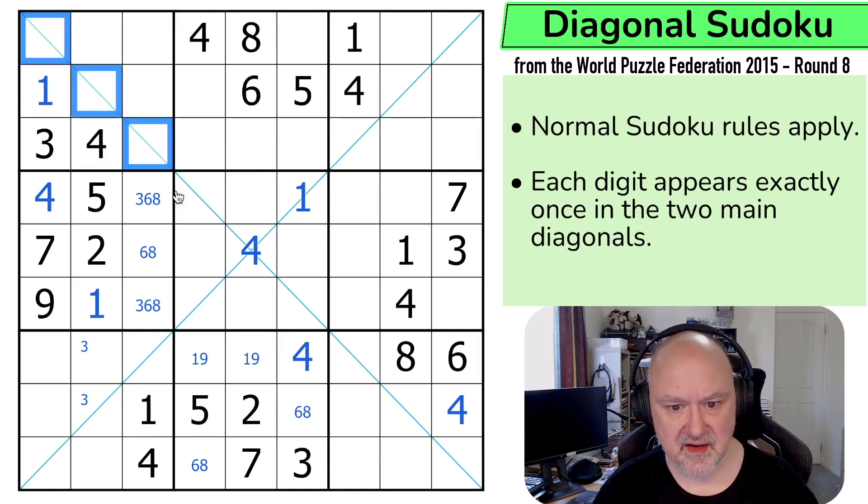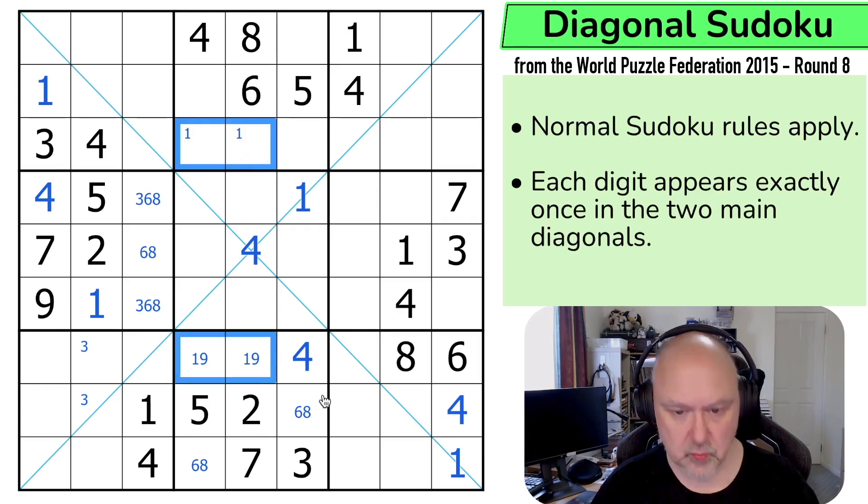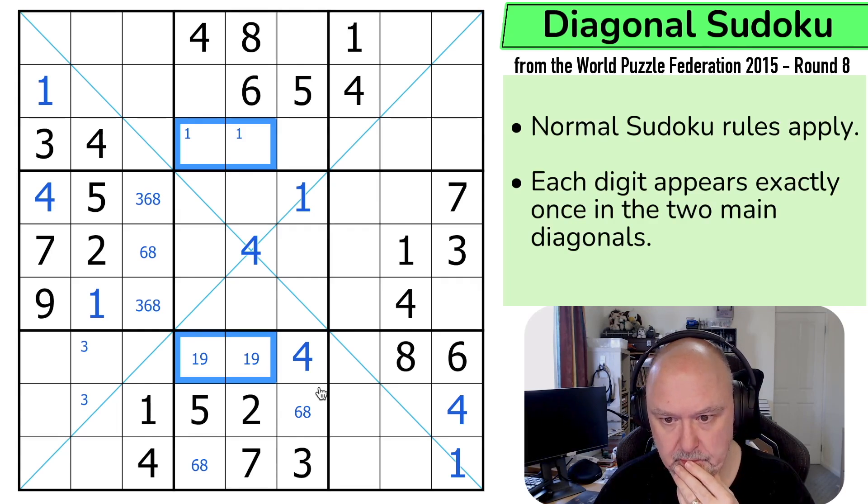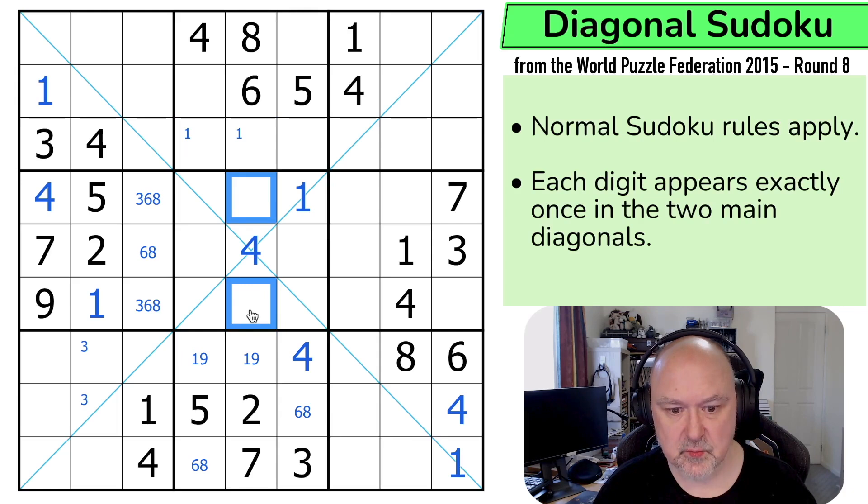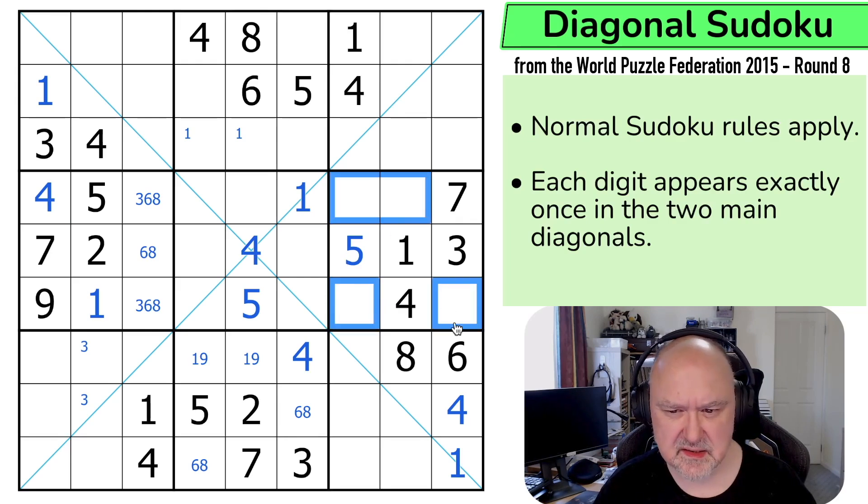Now, 1 on this diagonal can't be in any of those three or any of those. It has to be in one of those three. And both of those, oh, these two ones are looking down saying 1 is not there, so this is the 1. Or I could have used the 1, 9 pair. Can I go further with 1s? 1 is in one of those two, and I get an X-wing on 1s, which I can't use. 5 is in one of those two by Sudoku because of the 5s. This is N5. So 5 and 5 makes that N5.